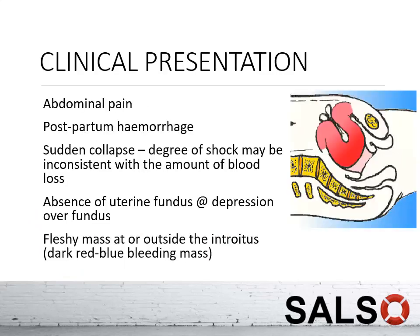To recognize uterine inversion you need to know the clinical presentation. Patients may have abdominal pain after delivery — since they should not normally feel abdominal pain at this stage, you should suspect either uterine rupture or uterine inversion. They can also have postpartum hemorrhage and sudden collapse, where the degree of shock is inconsistent with the amount of blood loss.